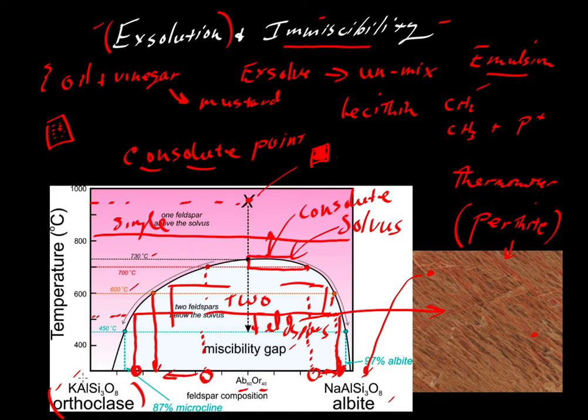Again, involving orthoclase and albite immiscibility. And then another example where we take a look at pyroxenes, where diopside and enstatite components also show this kind of immiscibility and exsolution at low temperatures.